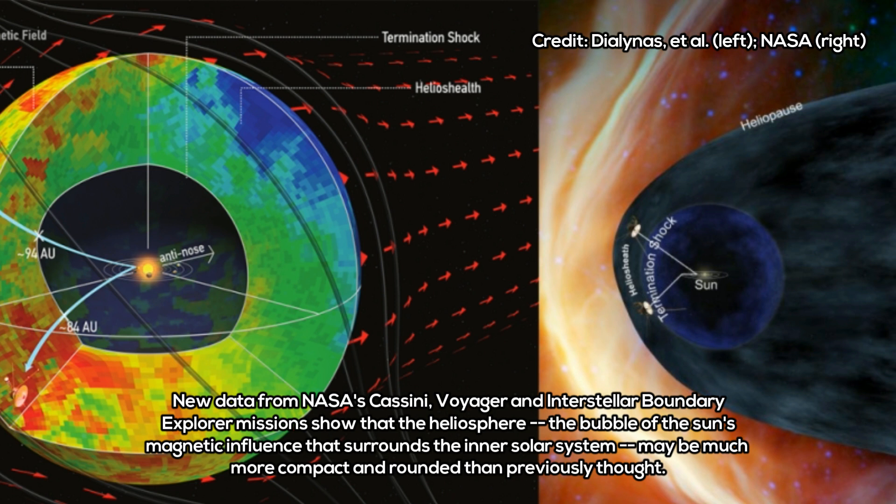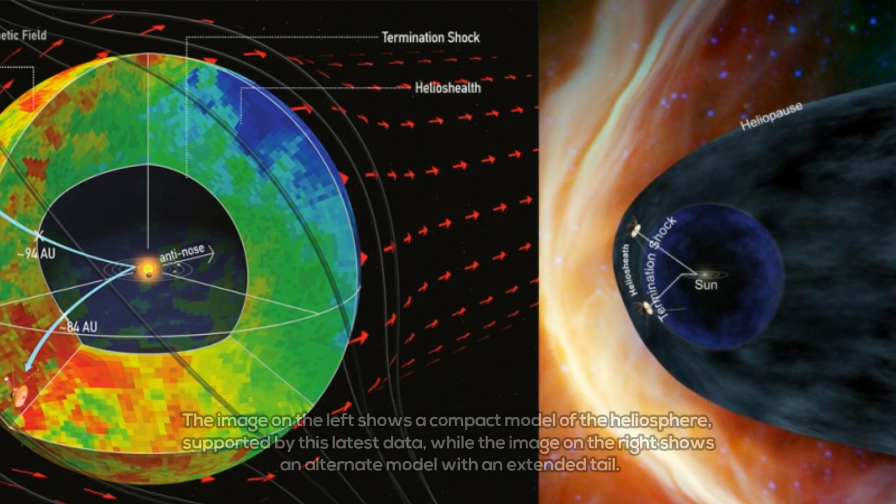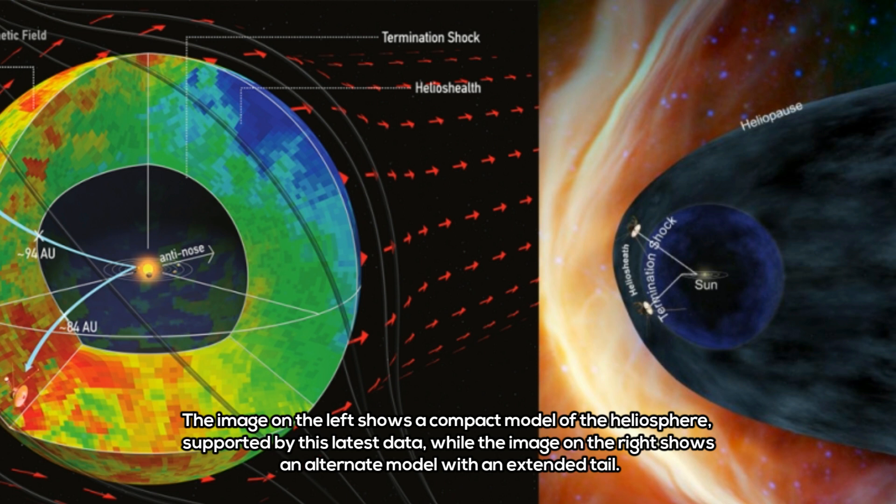suggests that our Sun and planets are surrounded by a giant, rounded system of magnetic field from the Sun, calling into question the alternate view of the solar magnetic fields trailing behind the Sun in the shape of a long comet tail.